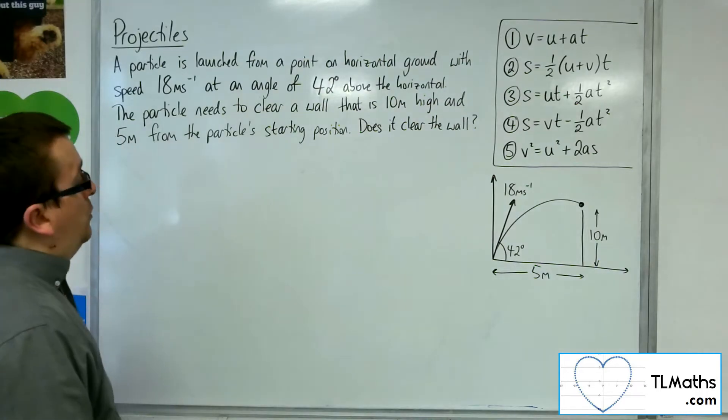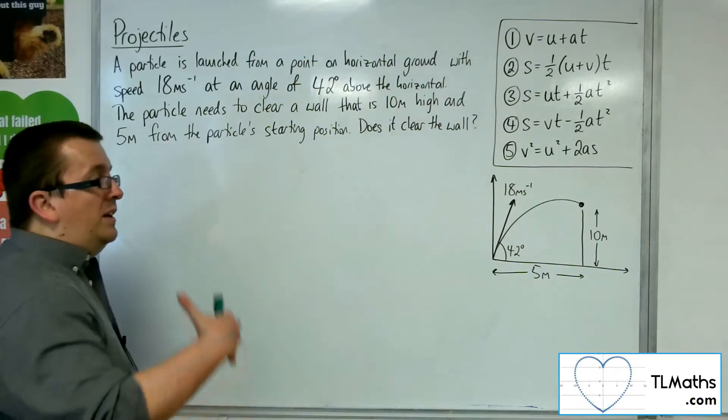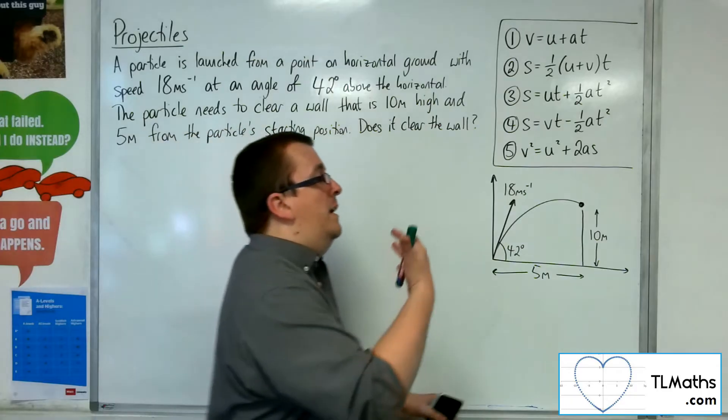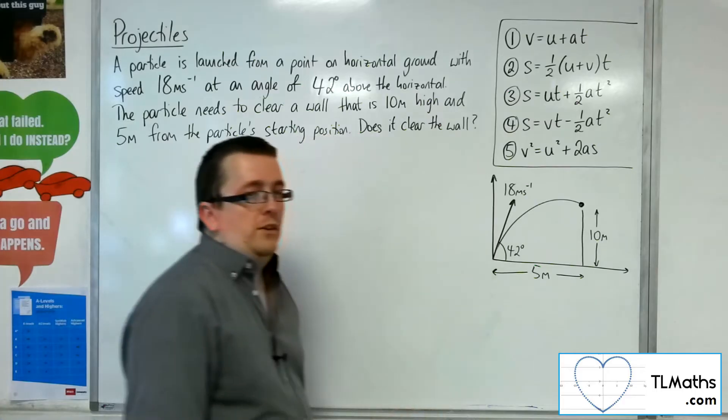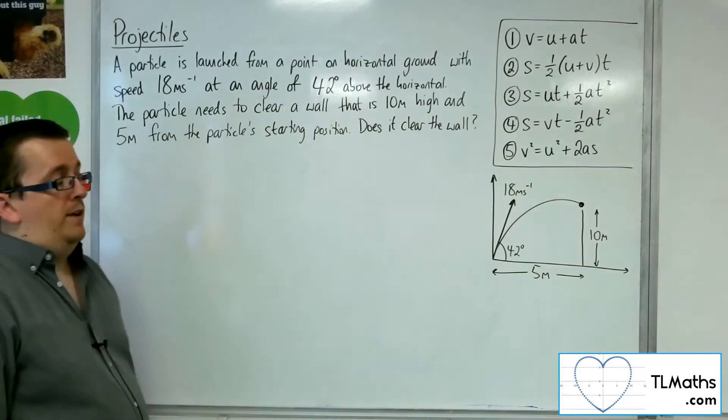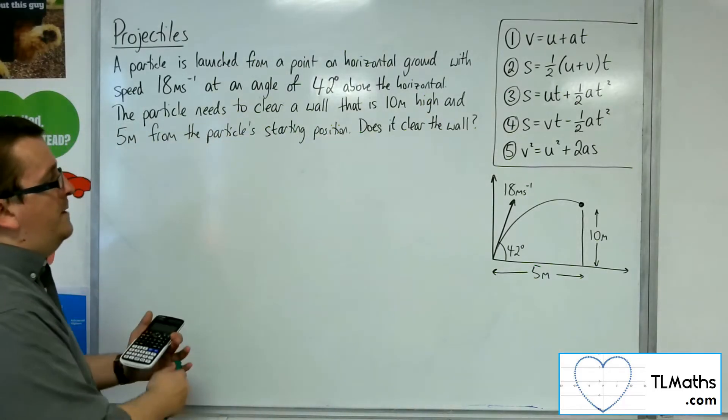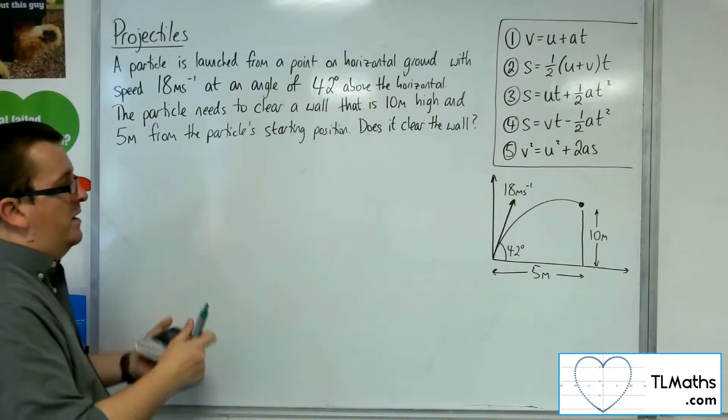So what I'm going to need to do is I'm going to need to figure out the vertical displacement of the particle when it is 5 metres along its journey, well, horizontally along its journey. So that's going to be the idea here.